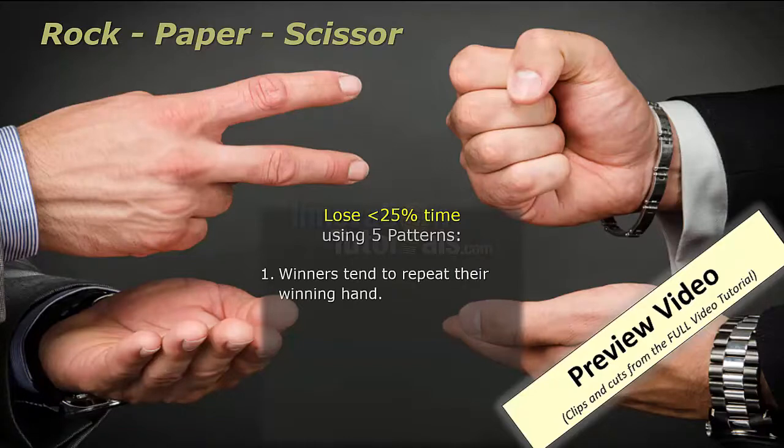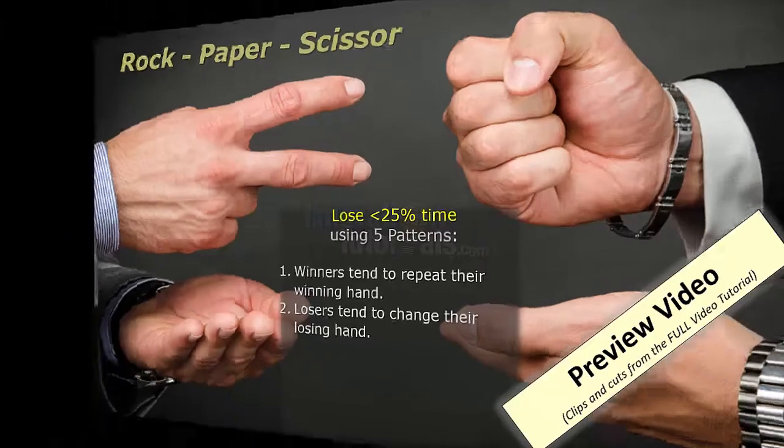Here's a pattern: winners, when they win, they tend to repeat their winning hand more than a random hand. Number two, losers tend to change their losing hand.